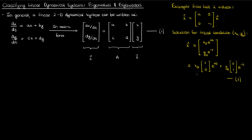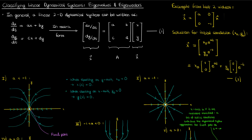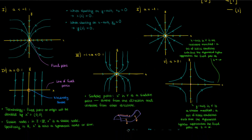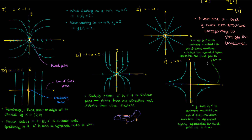The next thing to recall is the phase portraits for this dynamical system for different values of a. In each phase portrait, the x and y axes were the two directions where trajectories either converged or diverged from the fixed point — the origin — in a straight line. Trajectories starting on the x and y axes stuck to those axes throughout. In other words, the x and y axes contain straight-line trajectories towards or away from the fixed point.